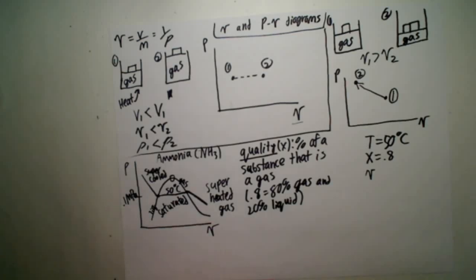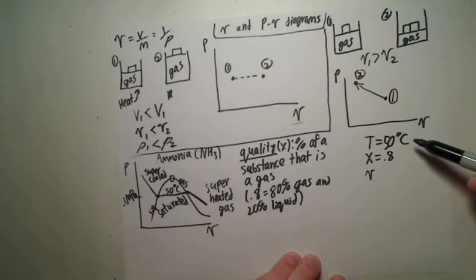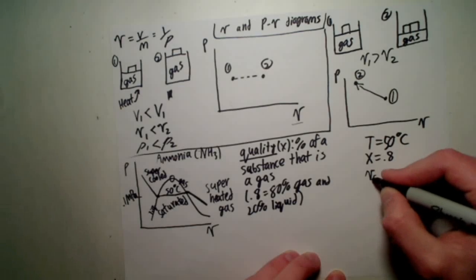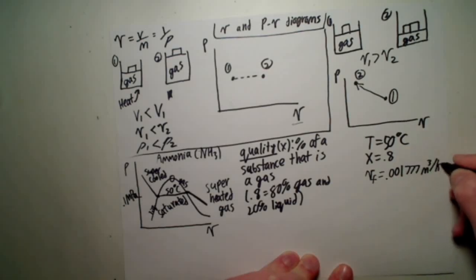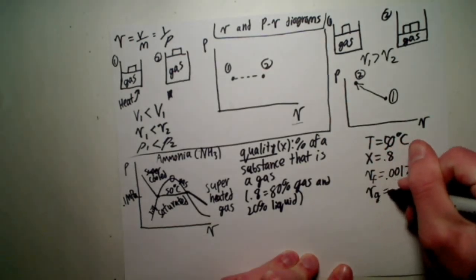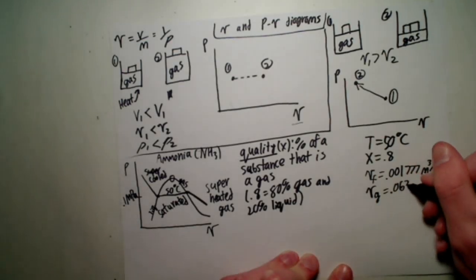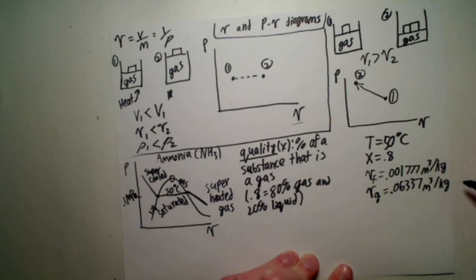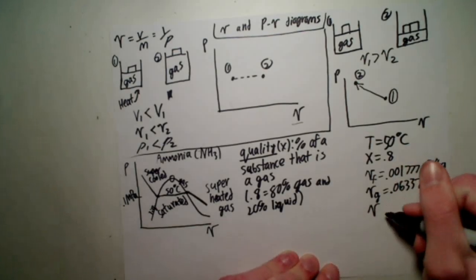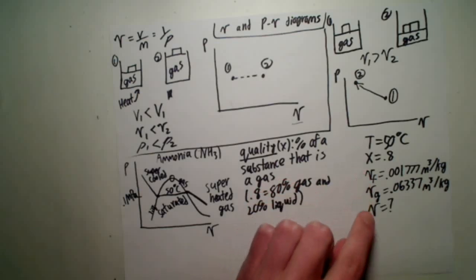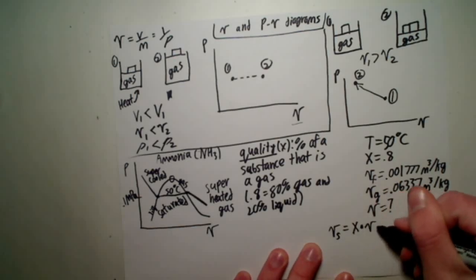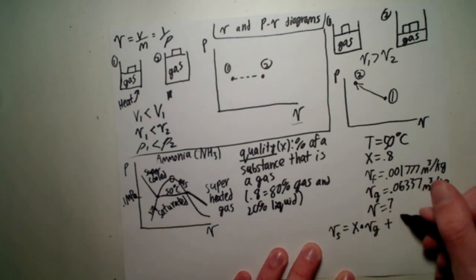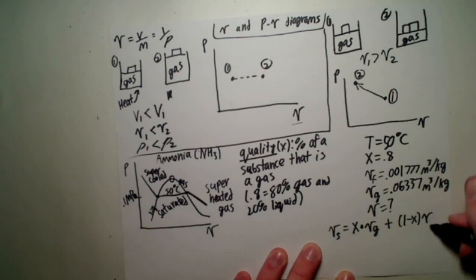I can look up a thermodynamic table for ammonia at 50 degrees Celsius and see that it has a specific volume for its liquid phase, we're denoting that with an f, to be 0.001777 meters cubed per kilogram. And we also look up that the specific volume of its gaseous state is 0.06337 meters cubed per kilogram. And I want to know what the specific volume is. Now we know its quality, so we know how much of its gas versus how much of a liquid we have. So if I wanted to find out what the specific volume of a substance is, I would take the quality and multiply that by the specific volume of its gaseous state, because that's how much gas we have, and then add one minus quality times the specific volume of a liquid, because that's how much liquid we have.